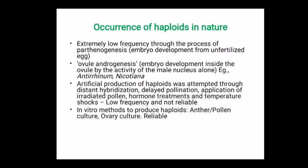Artificial production of haploid was attempted through distant hybridization, delayed pollination, application of irradiation, dead pollens, hormone treatments, and temperature shocks. But these produce haploid at very low frequency and are not reliable. Hence attempts are made using in vitro methods such as anther culture, pollen culture, and ovary culture. The frequency rate is slightly higher and it is a reliable technology.